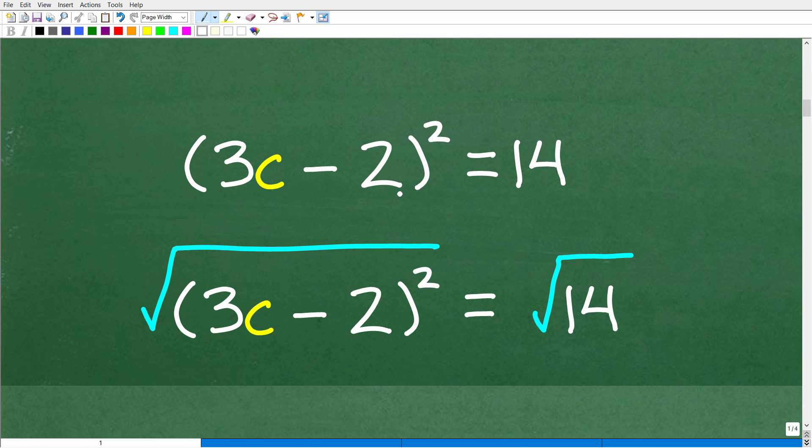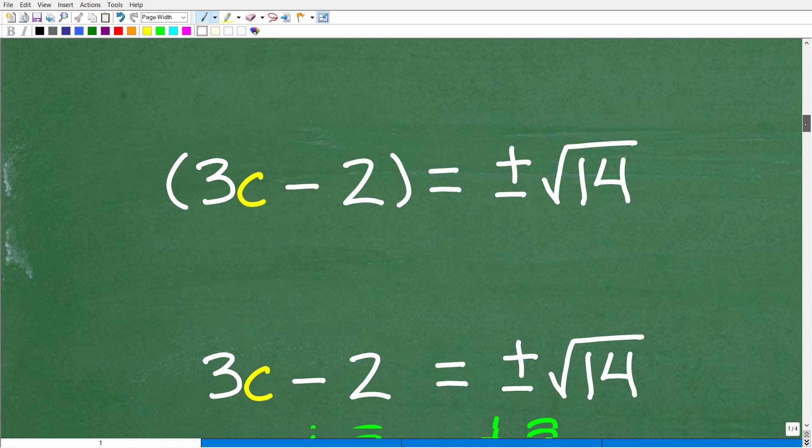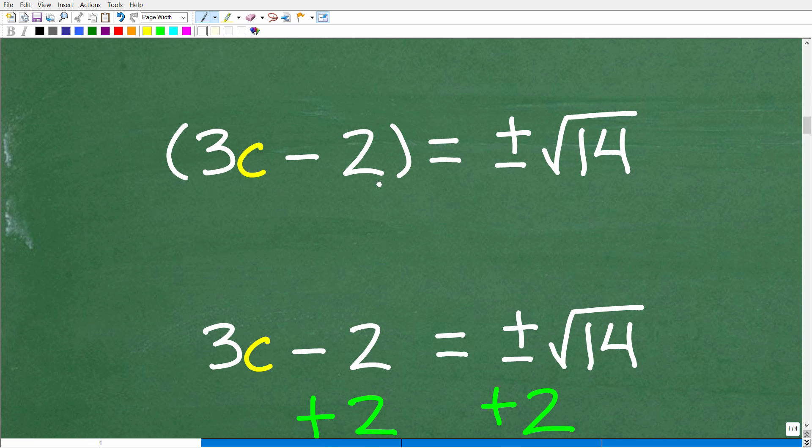So 3c minus 2 squared equals 14. Right off the bat, I want to take the square root of both sides. The square root of 3c minus 2 squared is simply 3c minus 2. The result is 3c minus 2 equals plus or minus the square root of 14.